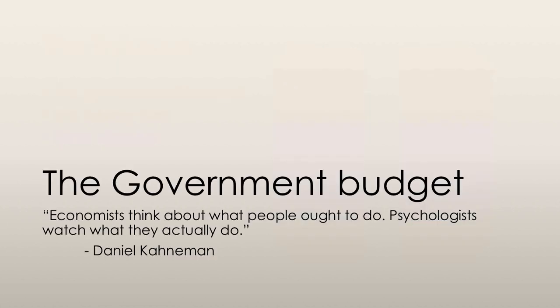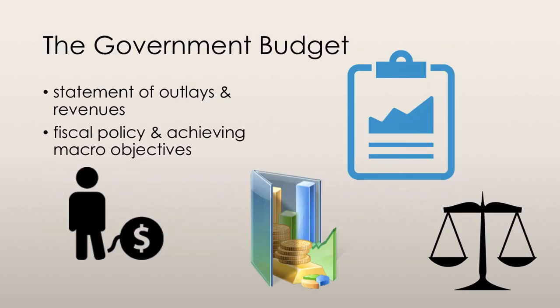Let's start off by talking about the government budget. The government, or federal budget, is the annual statement of the outlays and revenues of that government. Outlays is another word for the expenditure that the government undertakes. Fiscal policy is the use of some of the federal budget to achieve macroeconomic objectives such as sustained economic growth. The government spends a part of its budget to improve the state of the economy.